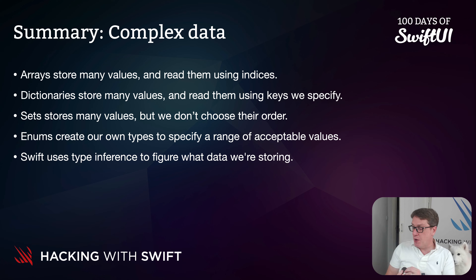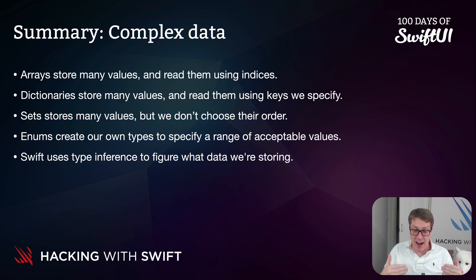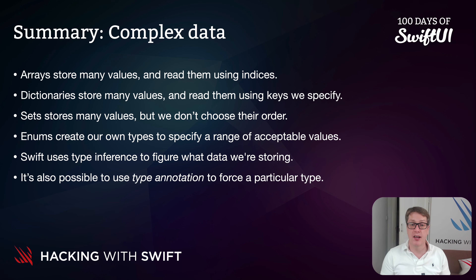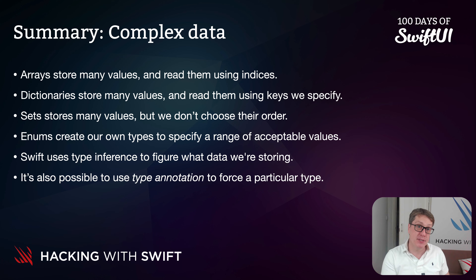By default, Swift uses type inference to figure out what we're storing. So when we assign a value to something, it goes: you're assigning a string, this thing must be a string. Or, assigning an integer or double — make it a double. It's really, really helpful to have that. But sometimes you'll also want to have type annotation to force a particular type, perhaps because you have missing data, or because you want to override Swift's choice.